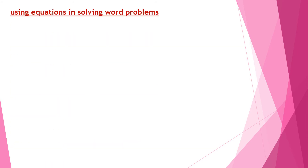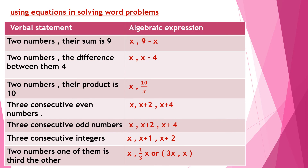Using equations in solving word problems, we must know how to convert verbal statements into algebraic expressions. For example, if two numbers have a sum of 9, we let one number be x, and the other number will be 9 minus x. When adding x and 9 minus x, we get 9. So the two numbers are x and 9 minus x.